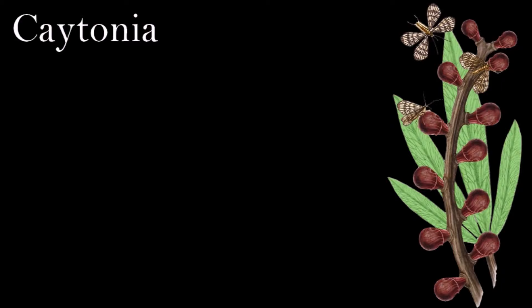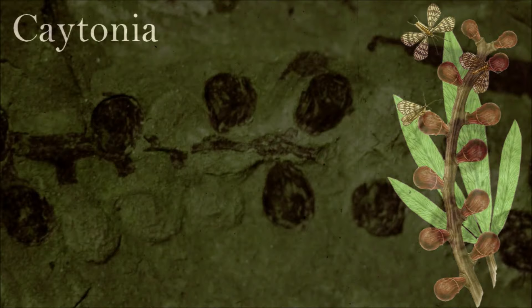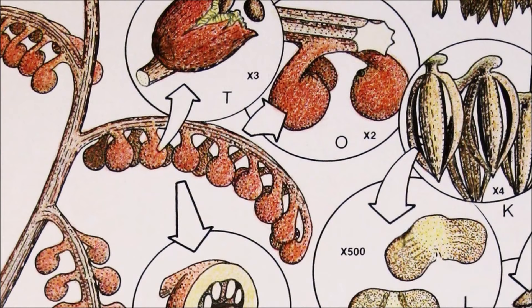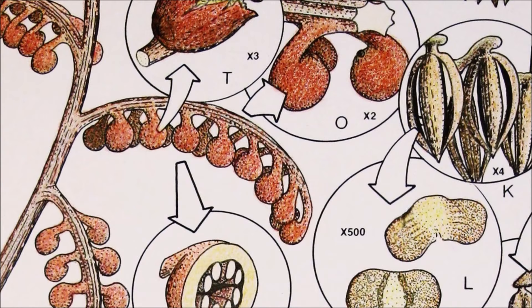Caytonia is the seed-bearing organ of a group of extinct plants called Caytoniales, which were abundant in subtropical areas during the Jurassic. Several seeds were enclosed in protective, helmet-shaped, seed-bearing structures arranged in two rows on either side of a central axis. The enclosure of the seeds within the cupules superficially resembles how today's flowering plants bear their seeds. The leaves produced by the plant also had features in common with flowering plants, particularly their mesh venation. For many years it was thought that Caytonia might have been a direct ancestor of the flowering plants, although this idea has now been rejected.